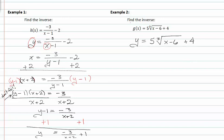Now I'm going to swap my x and y, so now I get x is equal to five cubed root of y minus six plus four. From here, I need to solve for y or isolate y. I can do this first by subtracting four from both sides.